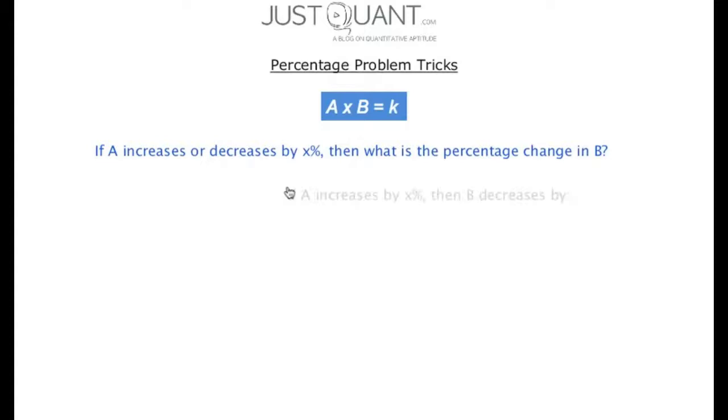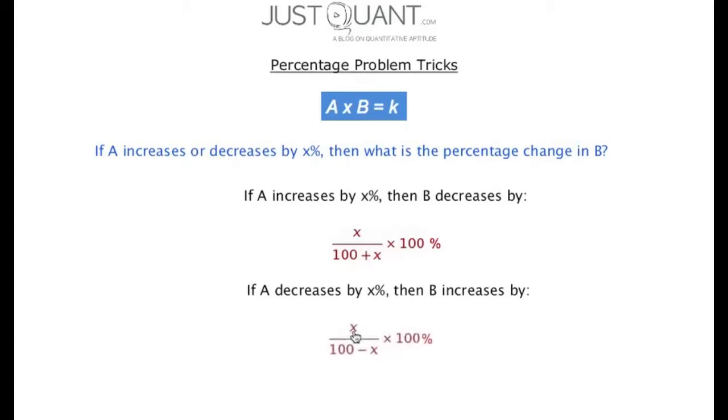We can solve using a formula. When A increases by x%, then B decreases by x/(100+x) × 100%. When A decreases by x%, then B increases by x/(100-x) × 100%.